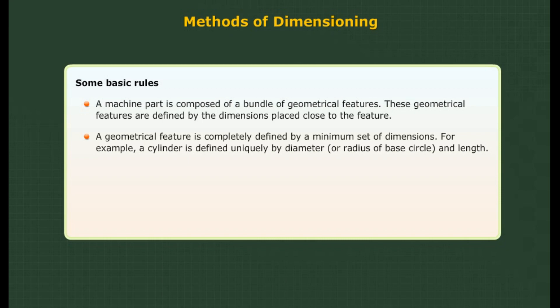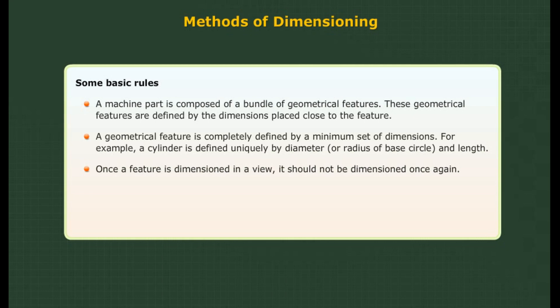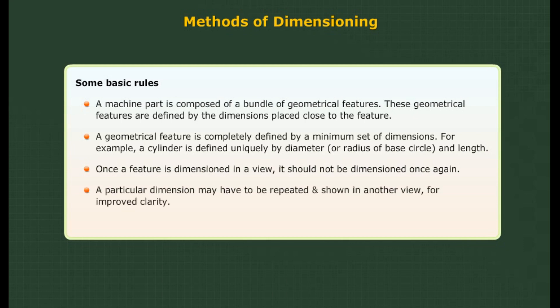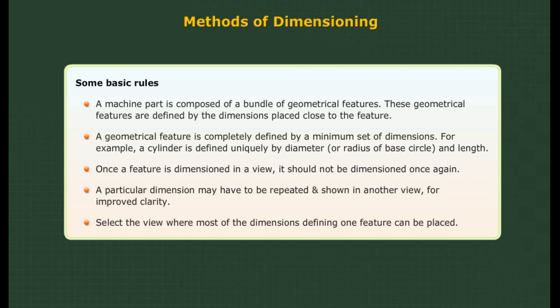For example, a cylinder is defined uniquely by the diameter or radius of the base circle and length — anything more is redundant. Once a feature is dimensioned in a view it should not be dimensioned again. In some cases, a dimension may have to be repeated in another view for clarity; in such cases the redundant dimension should be placed in brackets. Select the view where most of the dimensions defining one feature can be placed; if not possible, exceptions can be made.